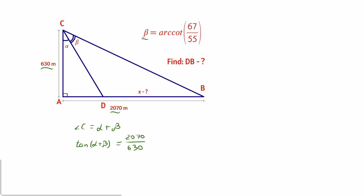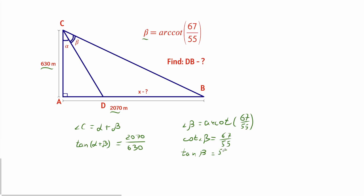Now let's take a look at angle beta. Angle beta is equal to arc cotangent of 67 over 55. That means that cotangent of angle beta equals 67 over 55. Now let's find tangent beta — it would be the reciprocal of that number, which is 55 over 67.